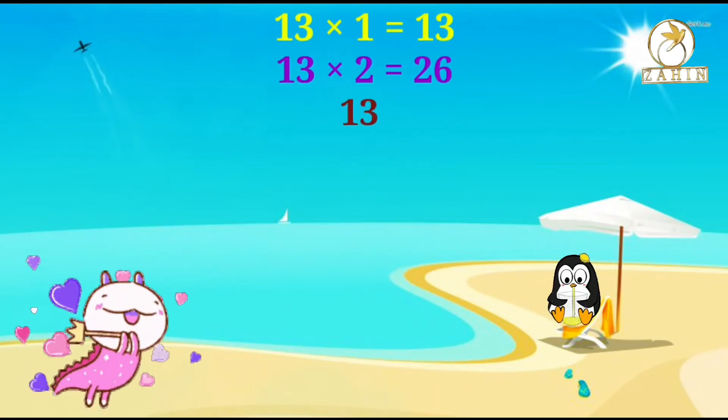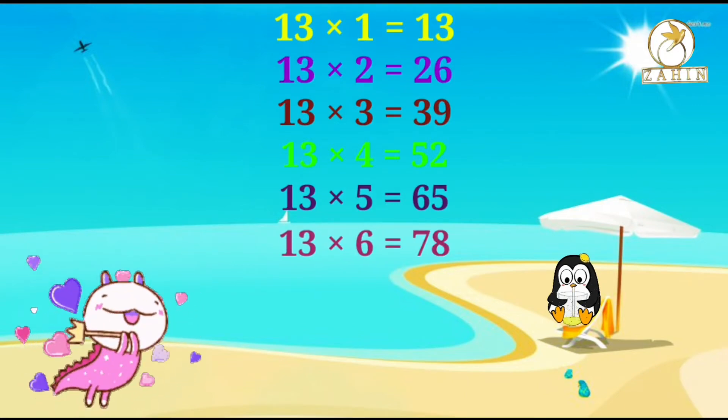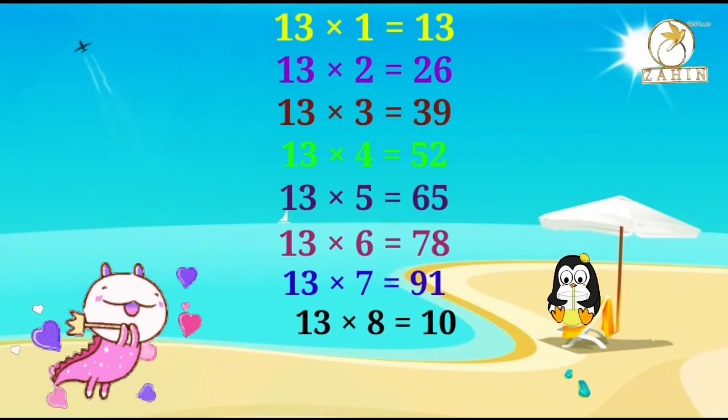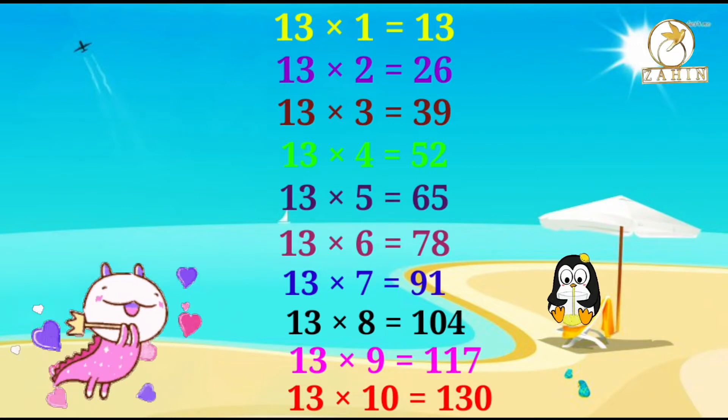13 times 2 equals 26, 13 times 3 equals 39, 13 times 4 equals 52, 13 times 5 equals 65, 13 times 6 equals 78, 13 times 7 equals 91, 13 times 8 equals 104, 13 times 9 equals 117, 13 times 10 equals 130.